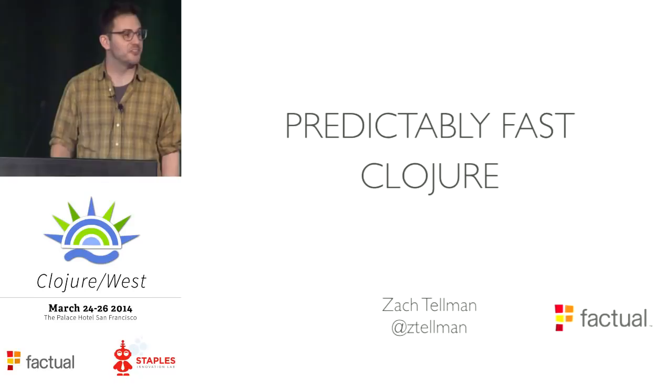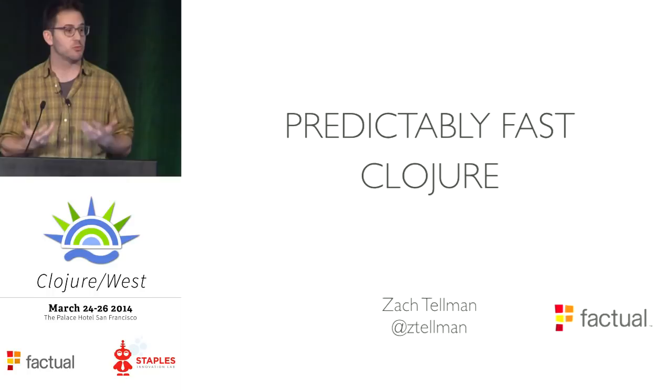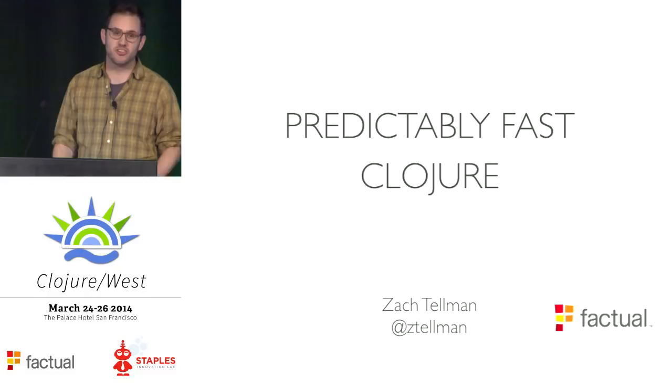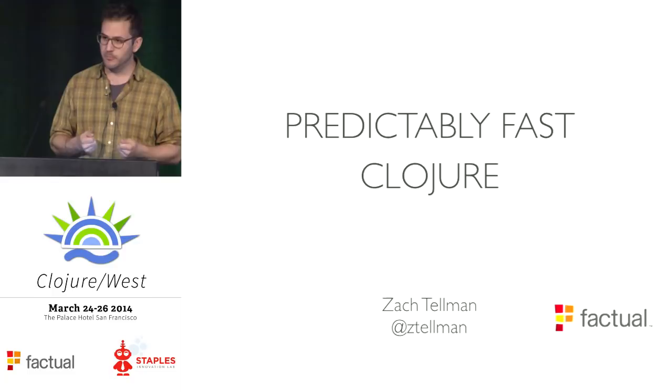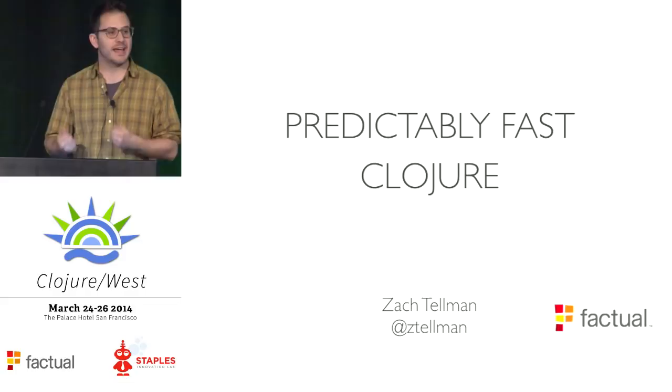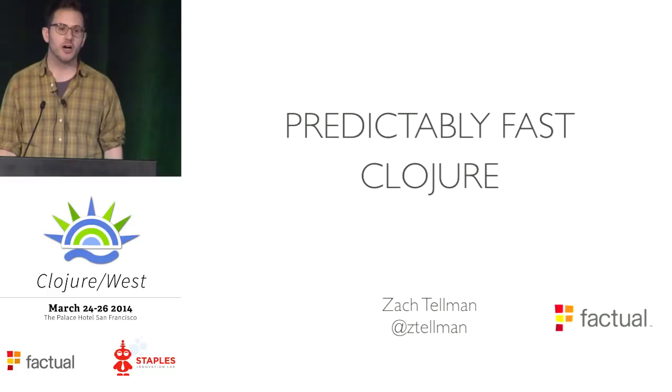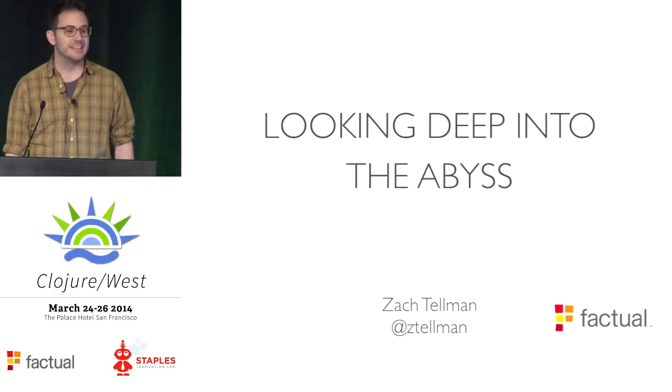I've called this talk Predictably Fast Clojure because Clojure is a language that values generality. It gives us unifying abstractions, like the seq abstraction, which allow us to forget that in Java the way to get a particular element in a string, an array, or a java.util collection is different. It allows us to reason at a higher level. But this generality is at tension with predictability. Understanding what's actually going to happen when we care about shared fixed resources requires digging a little bit deeper, understanding what actually happens underneath the covers.